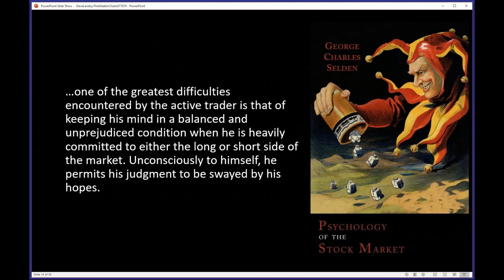In this book, G.C. Selden says: 'One of the greatest difficulties encountered by the active trader is that of keeping his mind in a balanced and unprejudiced condition when he is committed to either the long or short side of the market. Unconsciously, he permits his judgment to be swayed by his hopes.' There are two big cognitive biases that cause that. The more active you are, I think the more dangerous it can become.